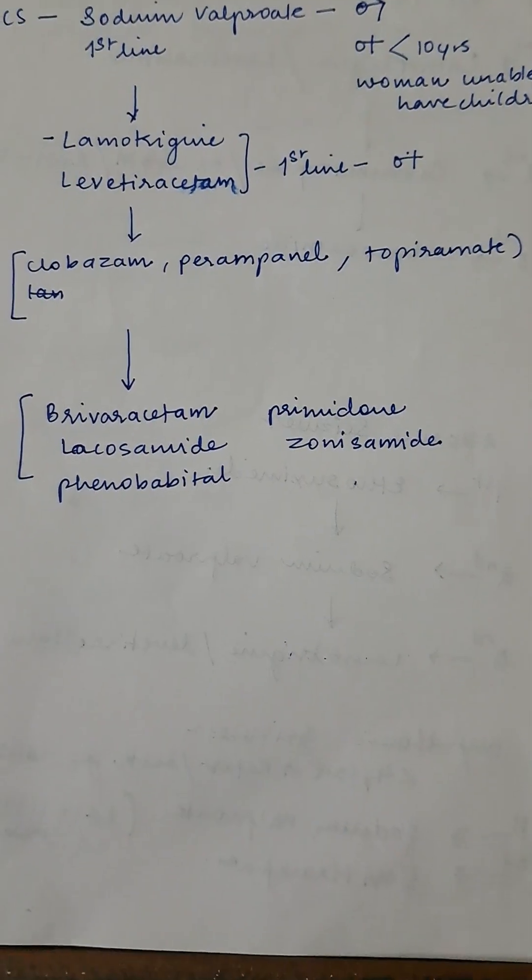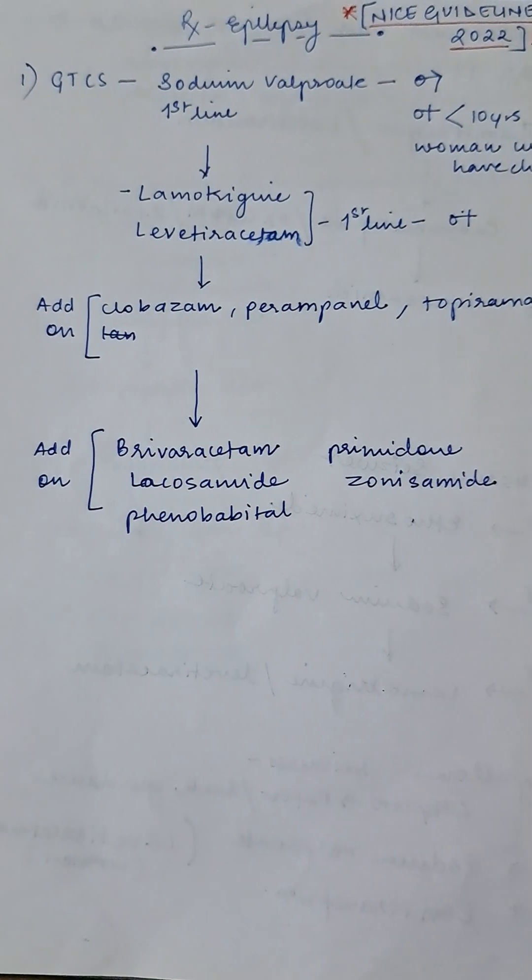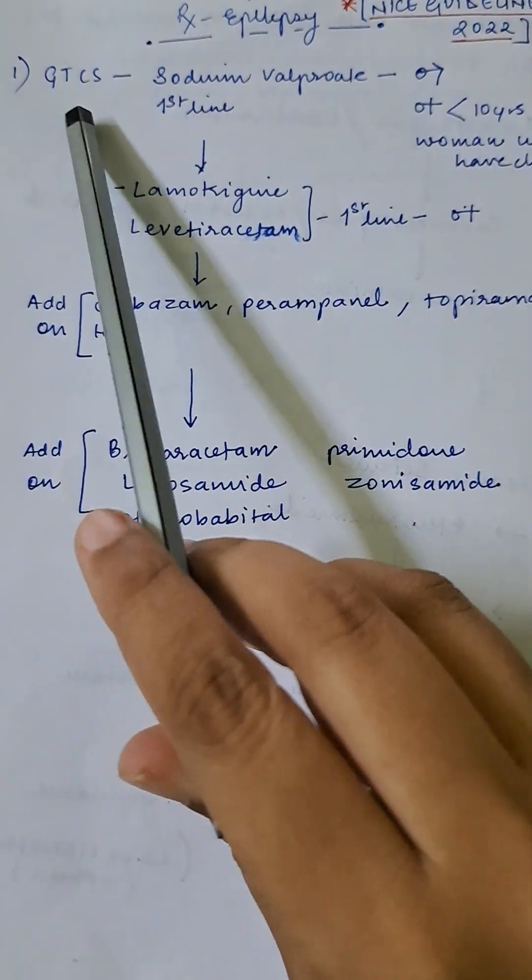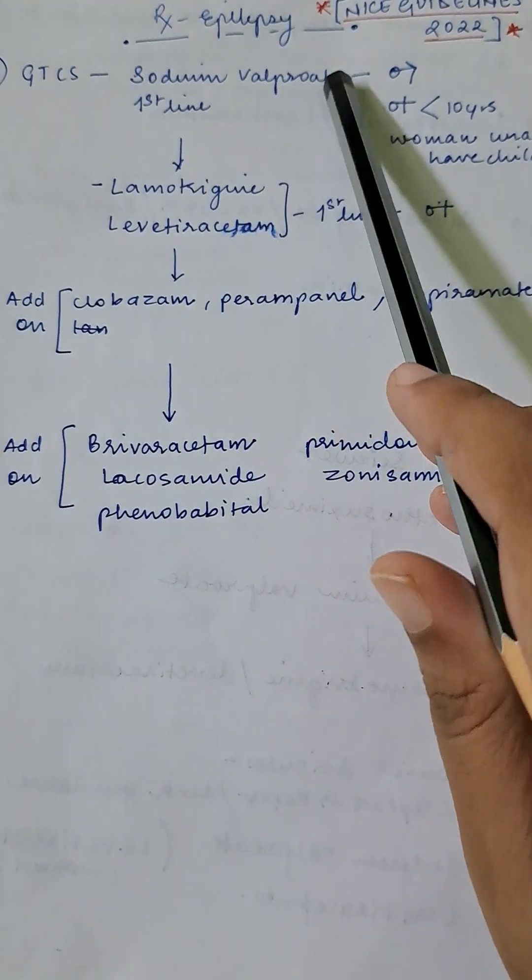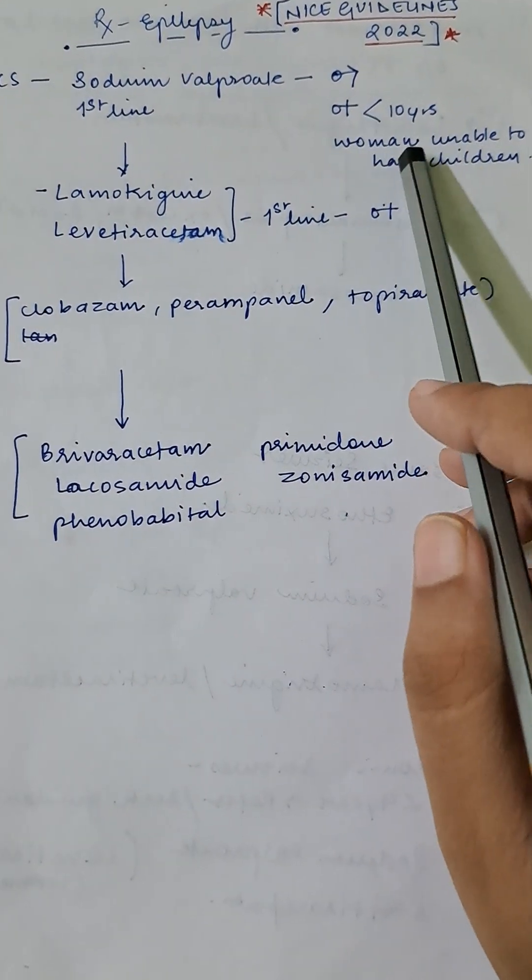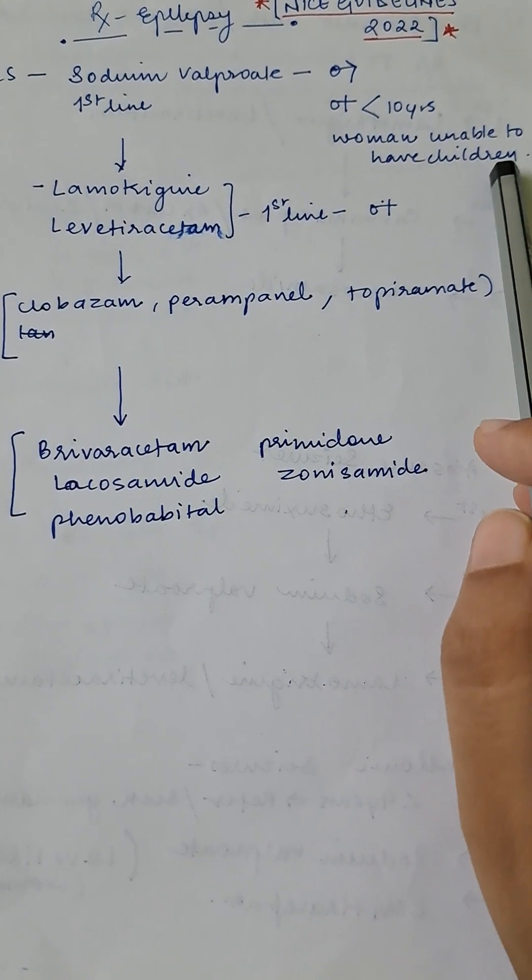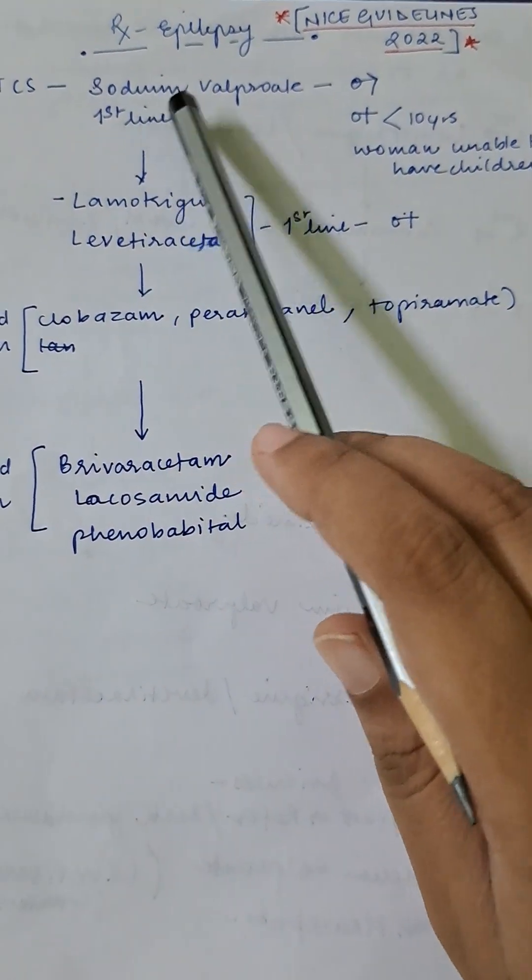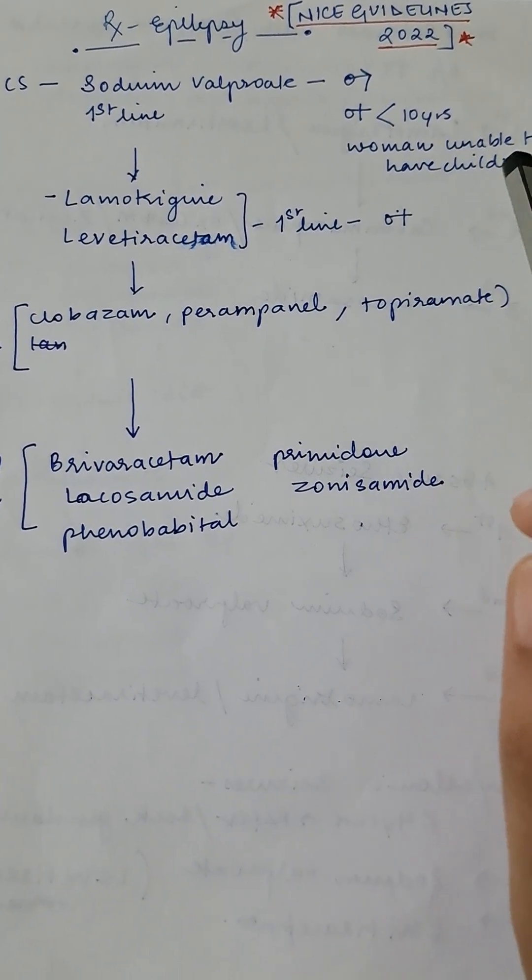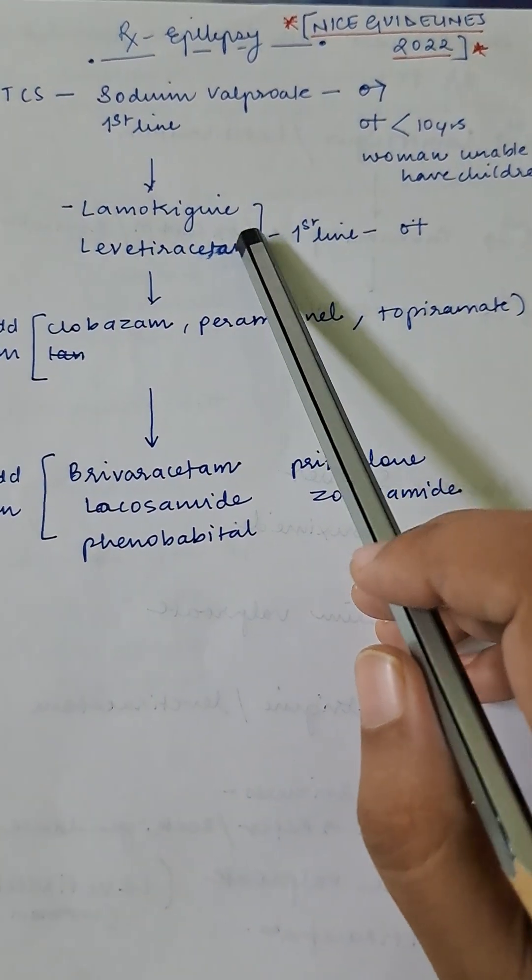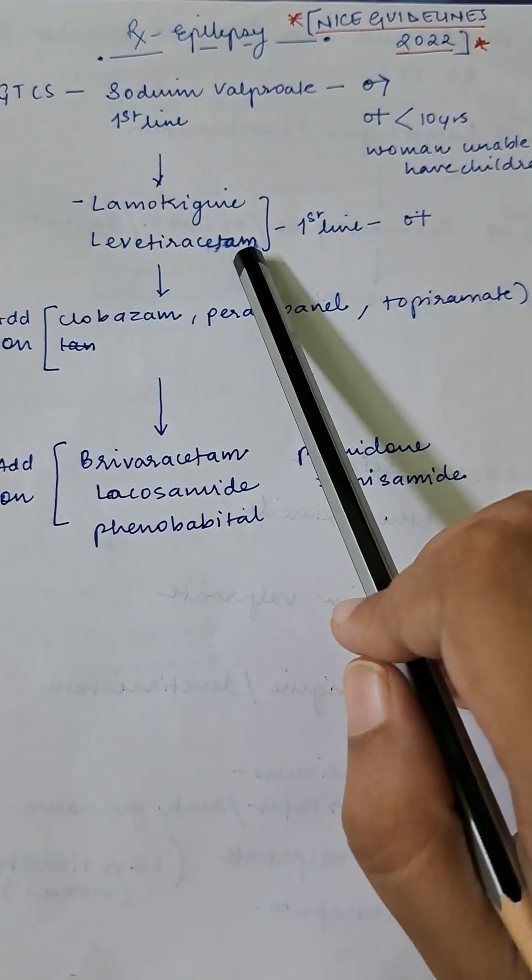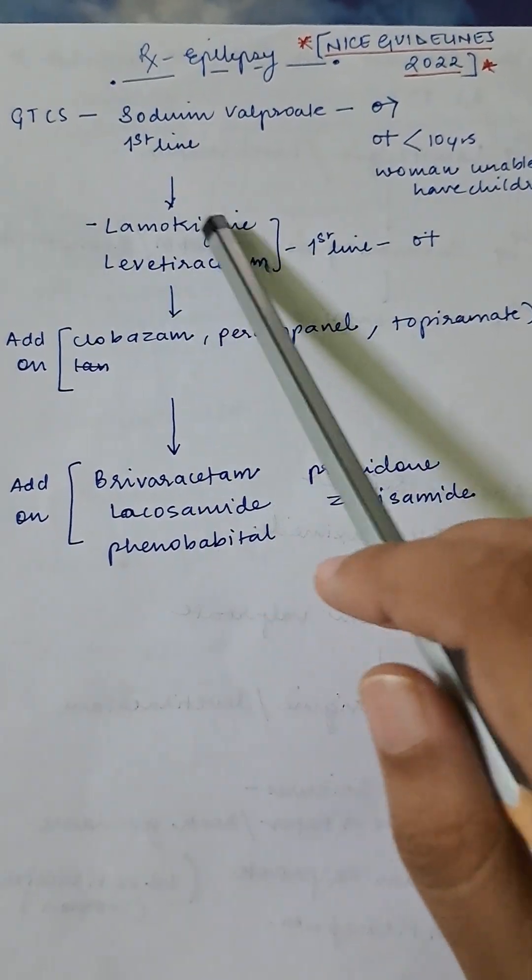Now we'll see how to treat specific adult epilepsies like generalized tonic-clonic seizure. The first line will be sodium valproate in males and females who are less than ten years and women who are unable to have children. In case of other females who are childbearing age or potentially can have children, the first-line treatment will be lamotrigine or levetiracetam. This will be second line in whom sodium valproate is already been started.